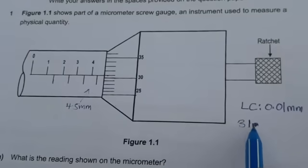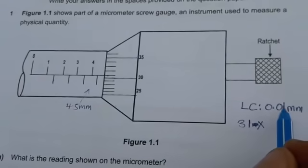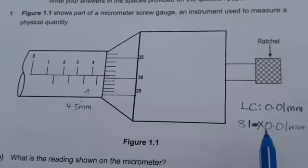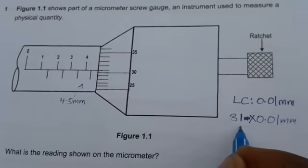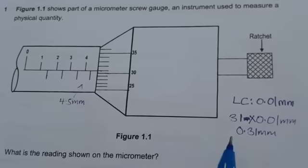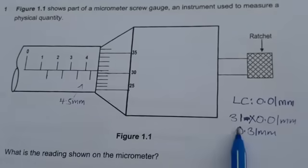Now this measurement that you've collected on the thimble, you need to multiply it by the least count, which is 0.01 millimeters. So when you do that, you're going to see that here you have 0.31 millimeters.